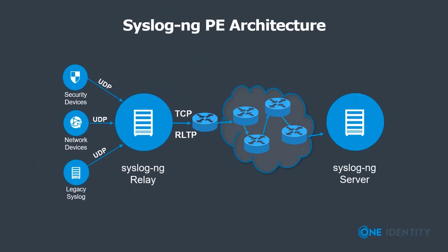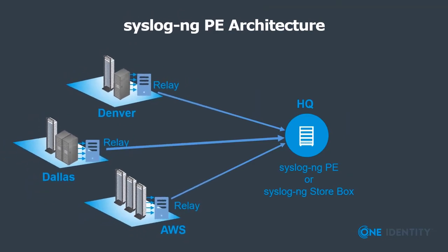It can be routed from anywhere in the world. You can be grabbing data from the cloud, from network devices, from storage devices, old legacy Syslog servers, possibly Syslog-NG servers — forward them out and get them to the right target. Data can come from anywhere, hit the relay or use a client, and go lossless. When you use RLTP, you're talking about something that guarantees delivery. Here we've got an example where you're getting data from Denver, from Dallas, and from AWS — whether you're going to Syslog-NG PE or Store Box.